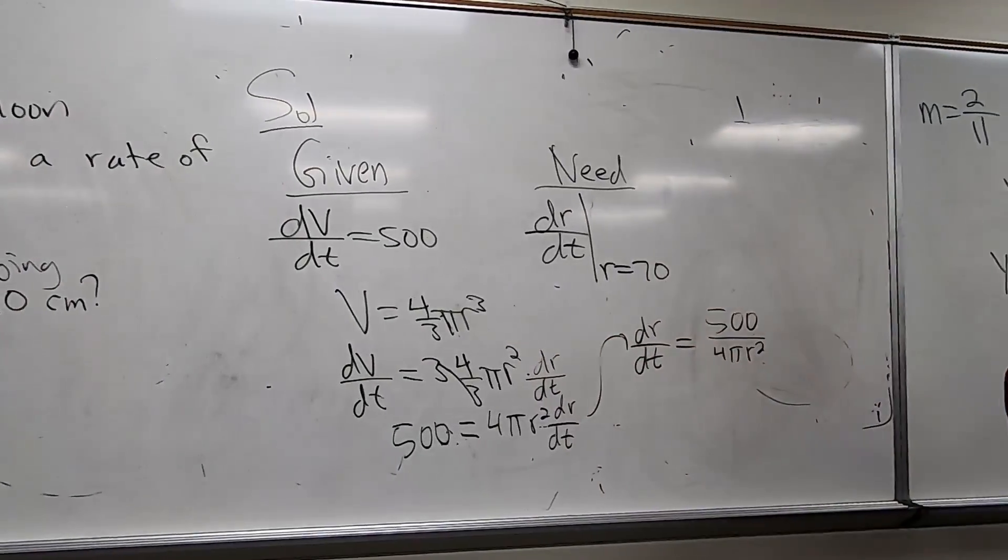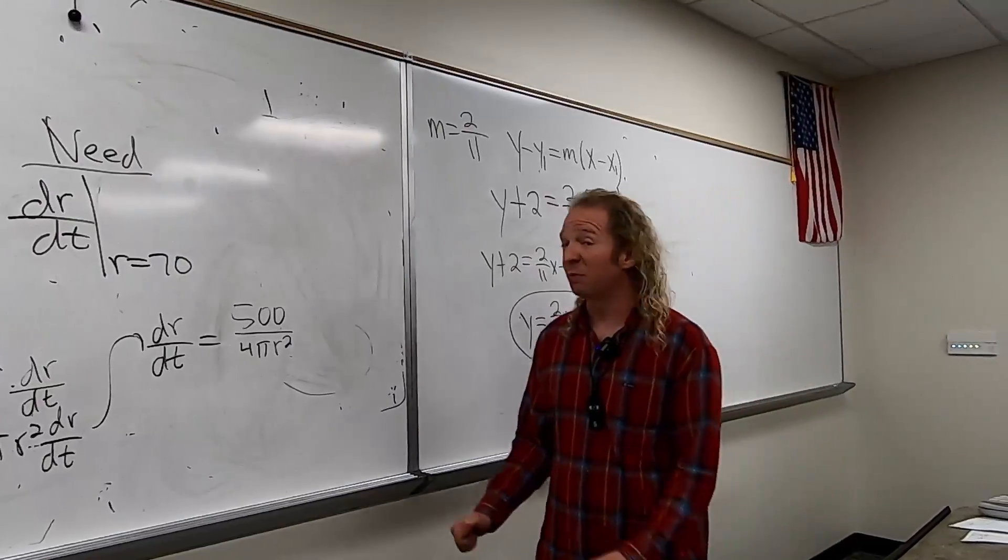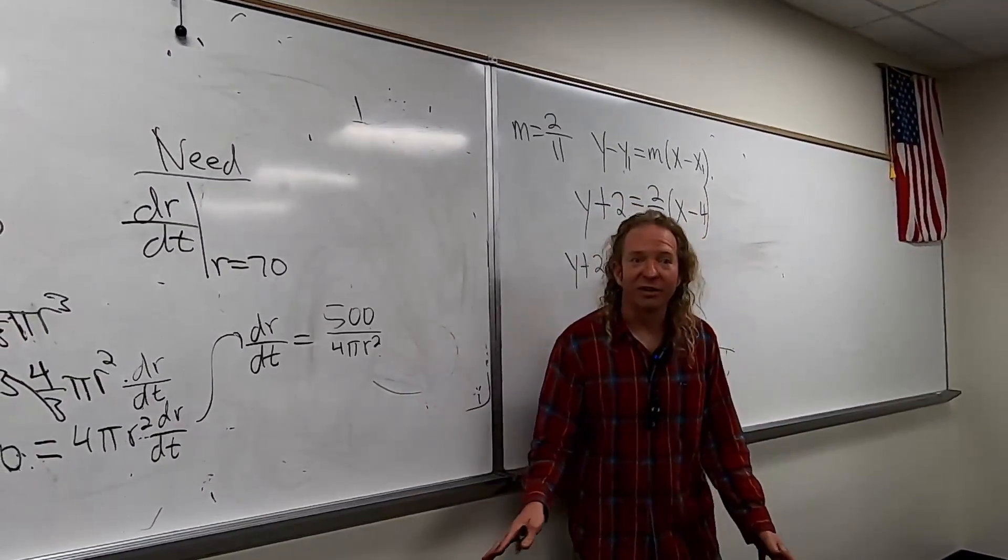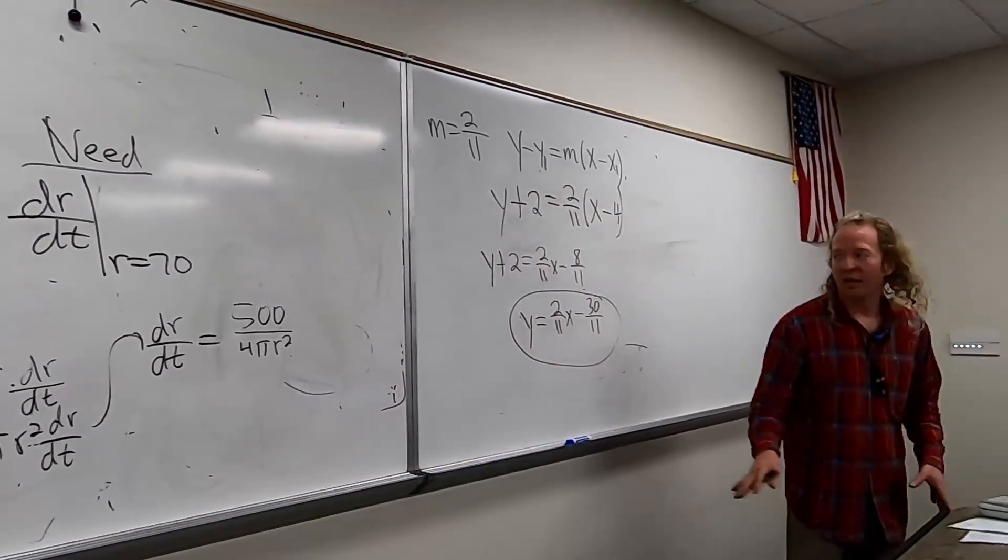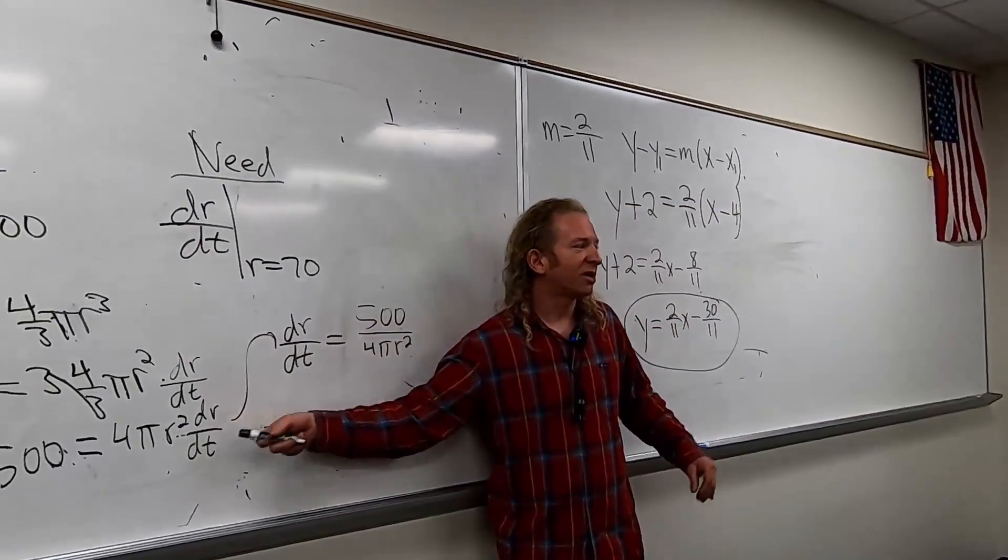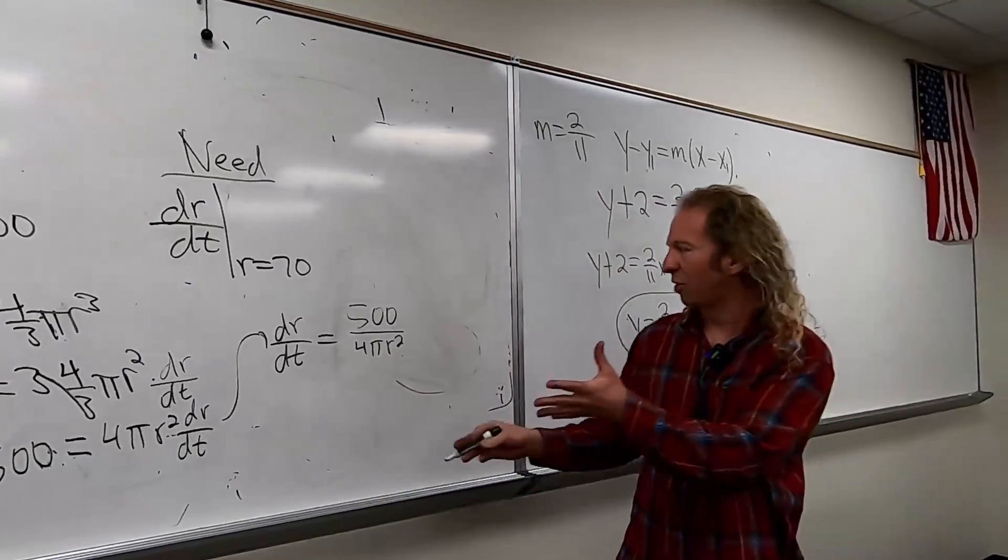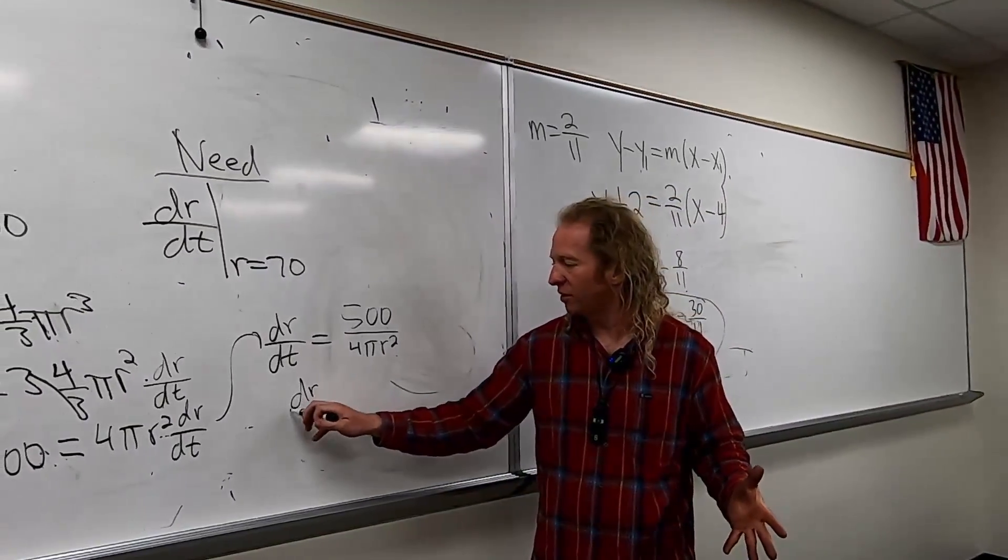So the rate of change of the volume is equal to 4 pi r squared times the rate of change of the radius. So you have related rates of change. So it's classic Calc 1, related rates. Most people think this is extremely difficult. We're almost done, right? The last thing to do is plug in 70.